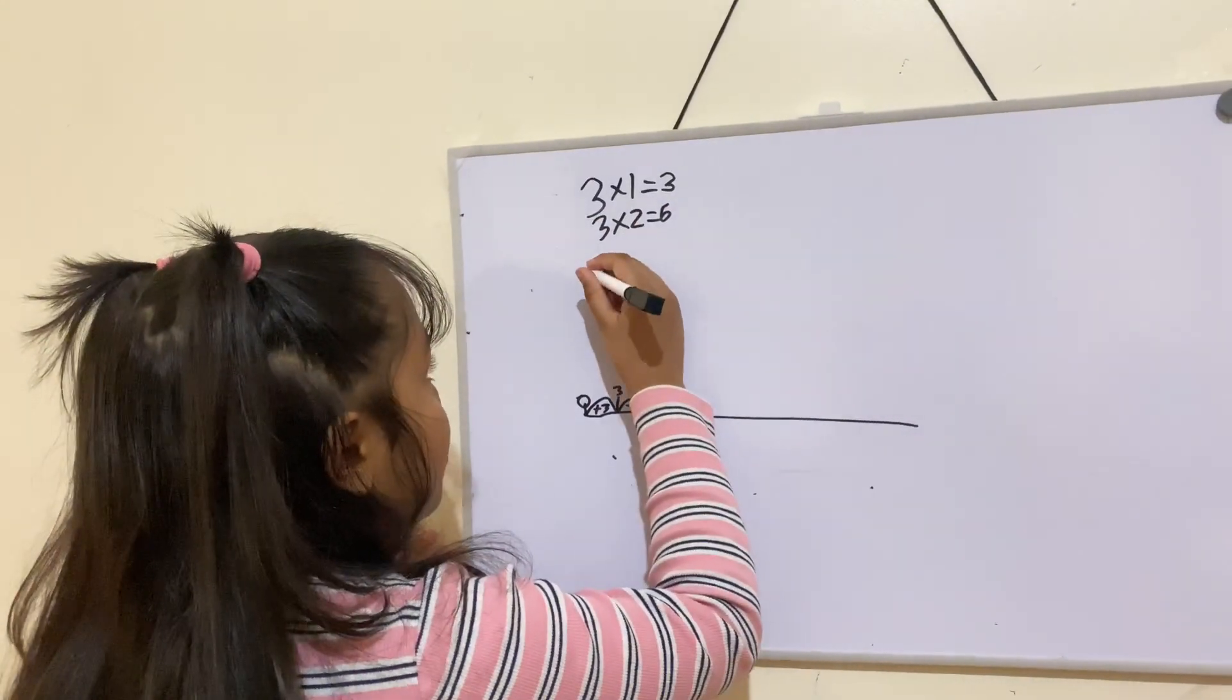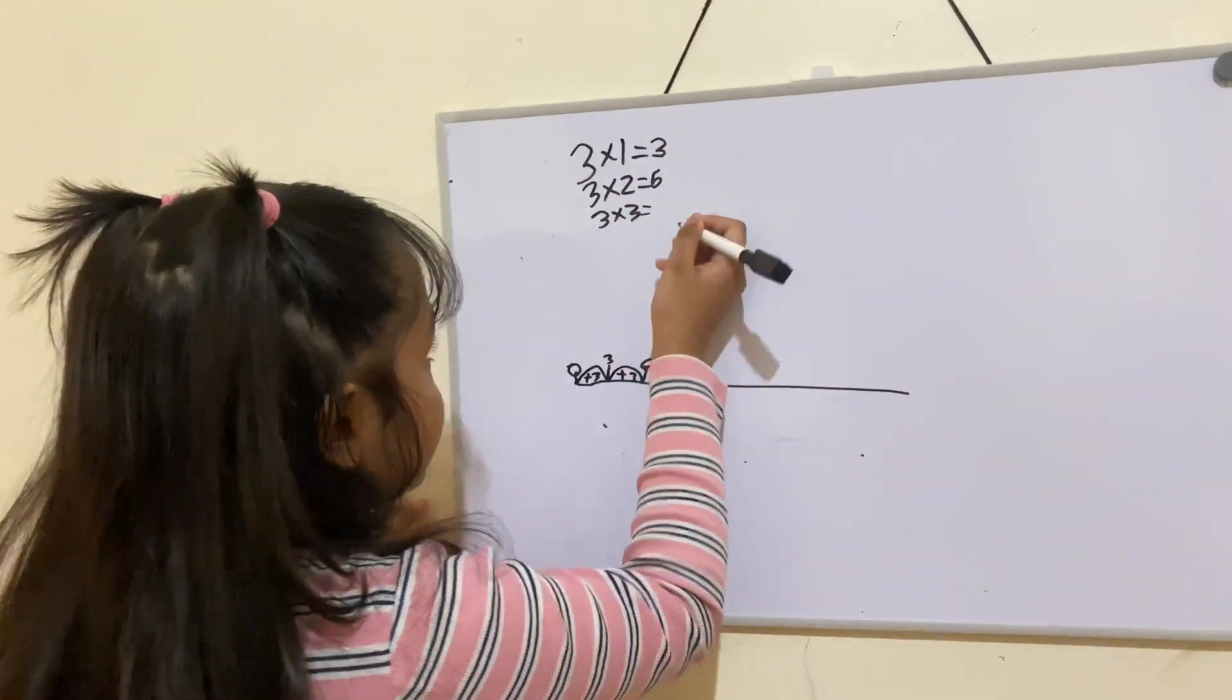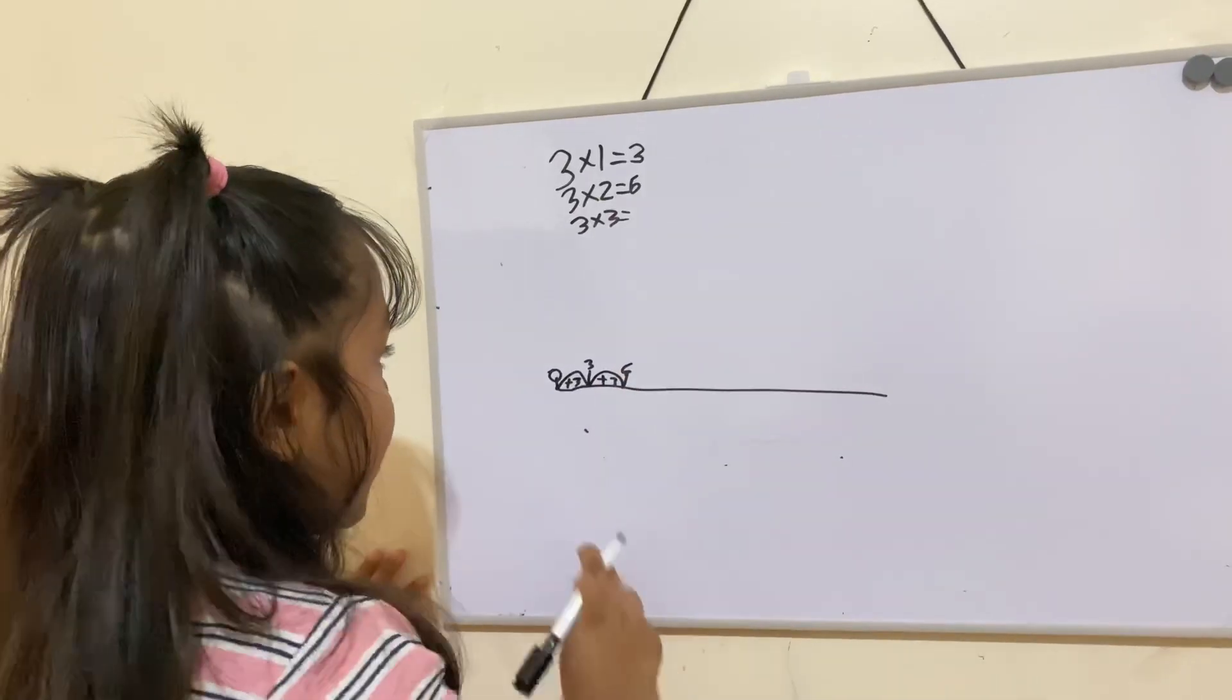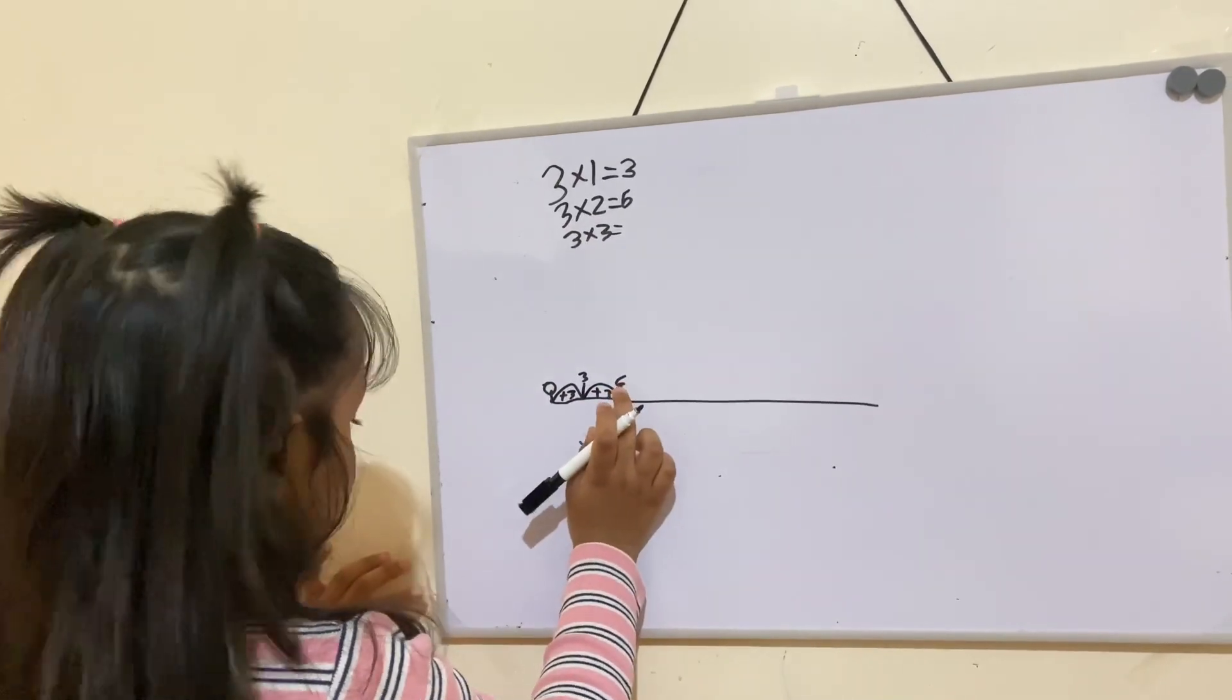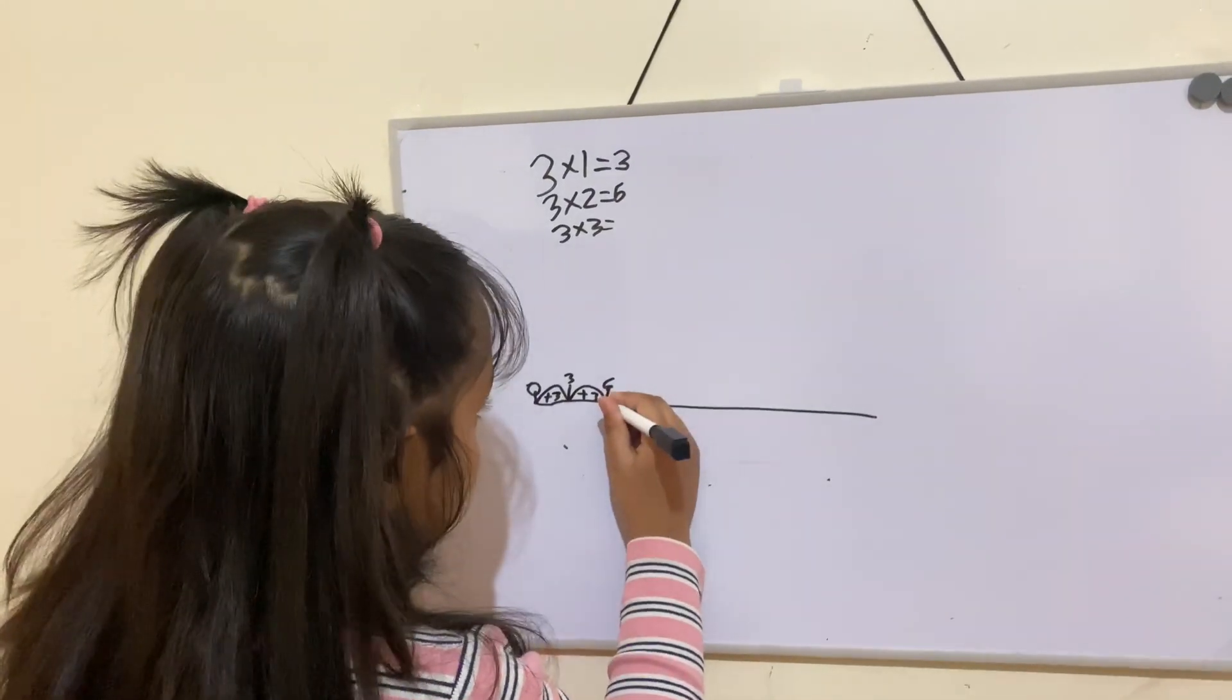Now, I'm going to show you 3 times 3. I can leave this here because I have to do one more jump from 6, add 3.